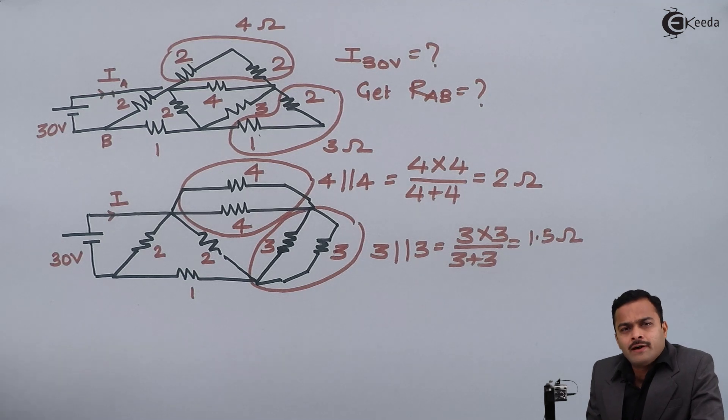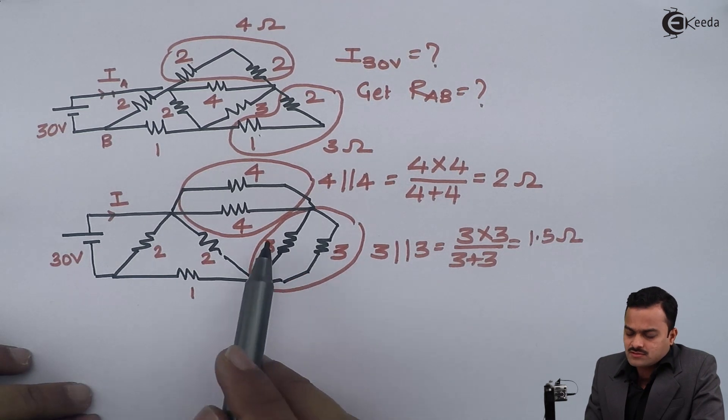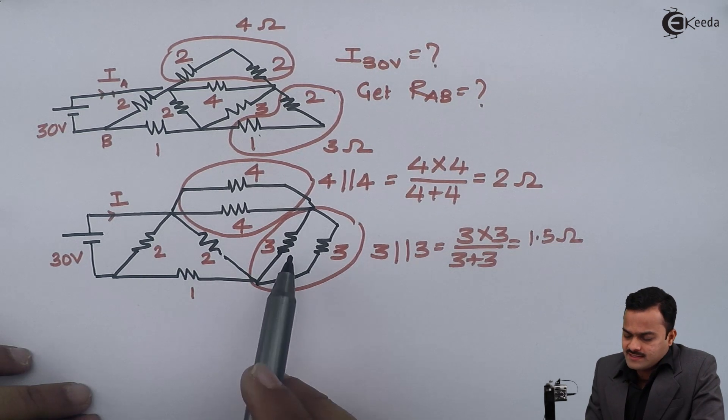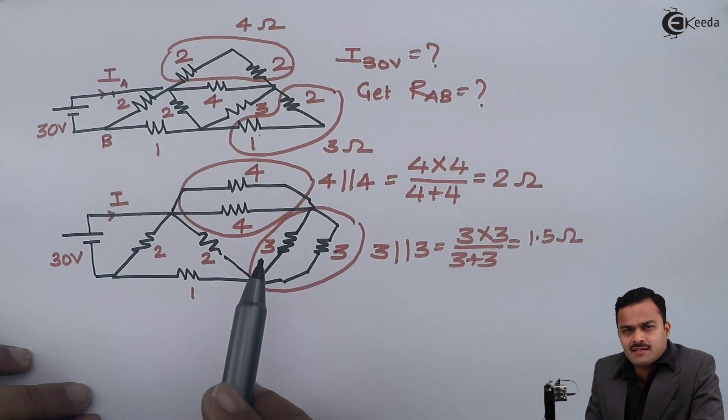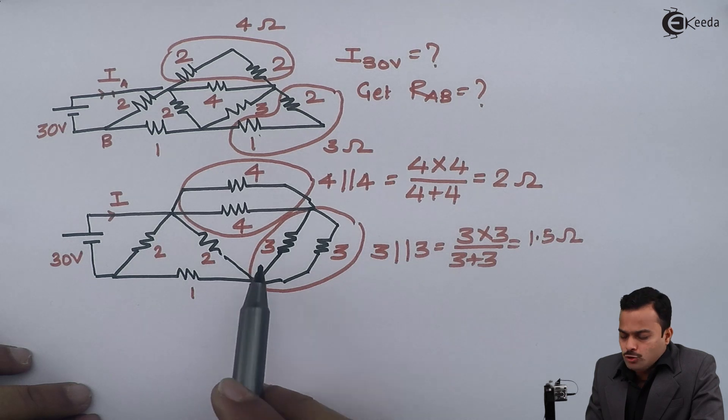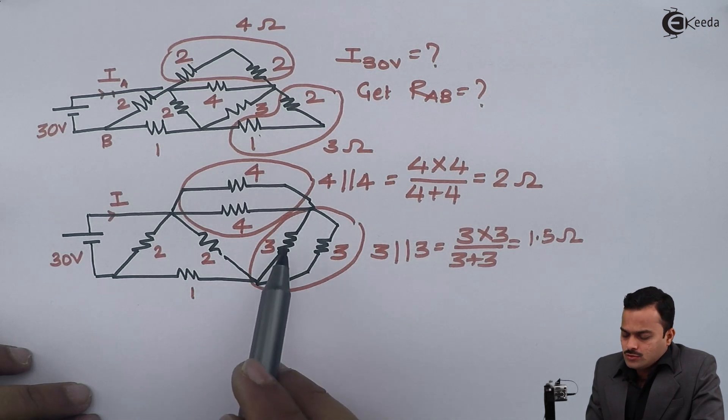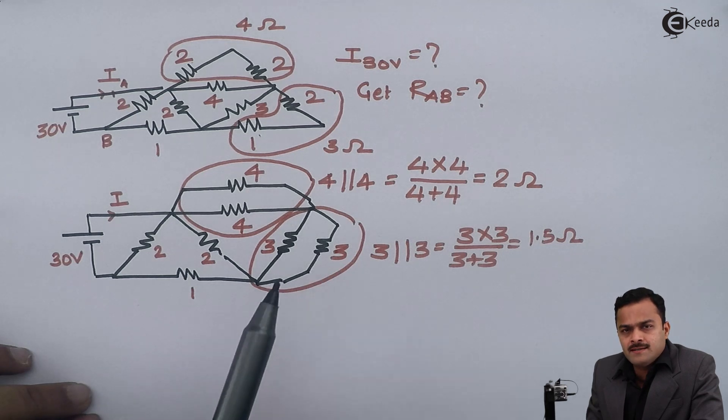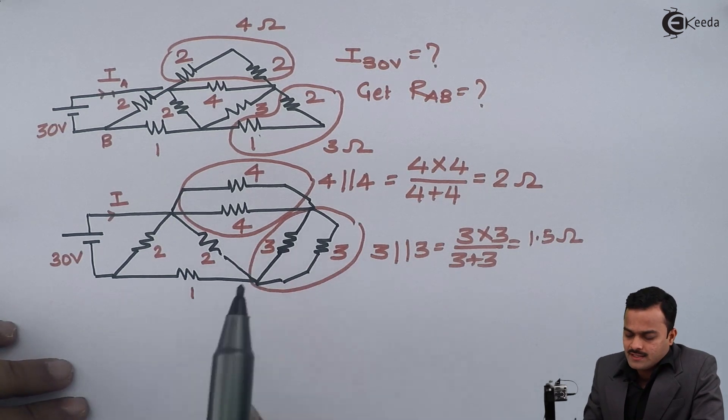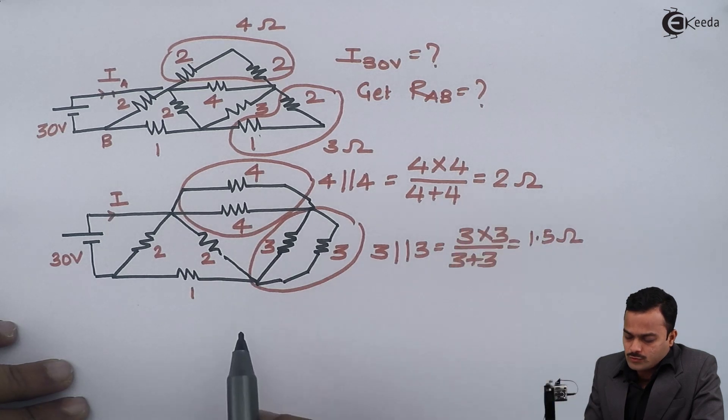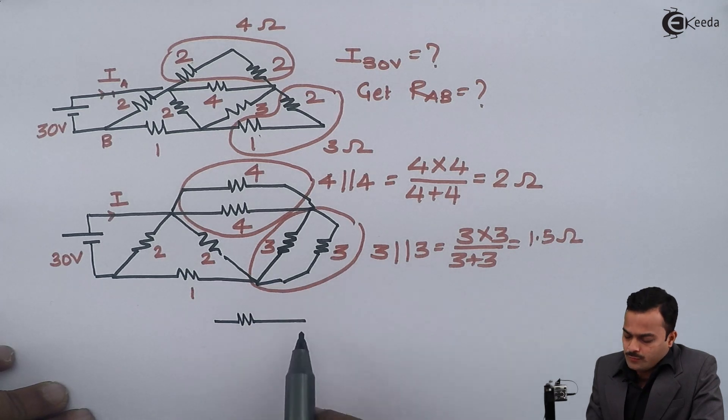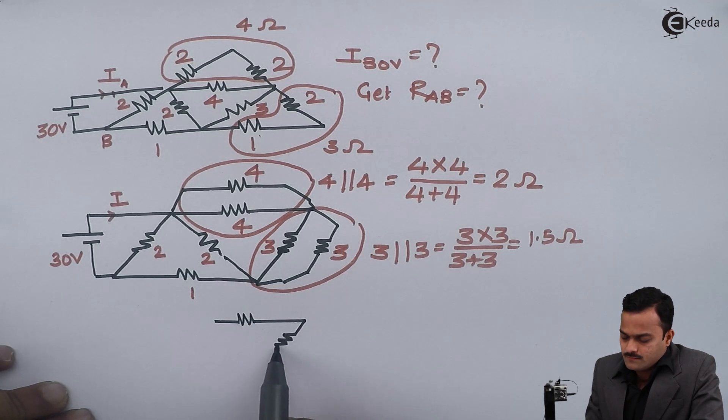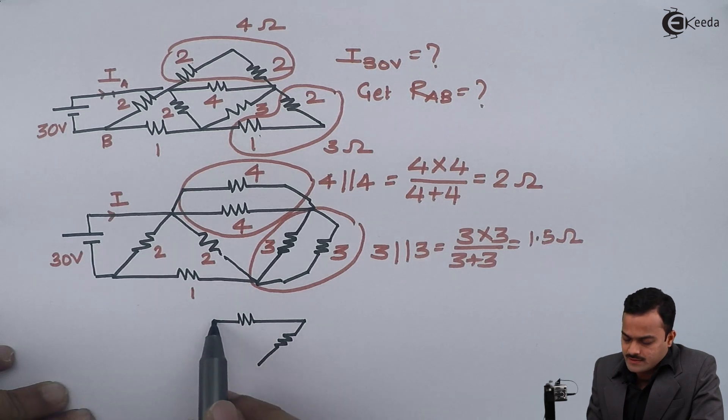Another hint I would like to give: whenever you have to check a parallel connection, whenever 2 resistors are forming a loop, I can say those 2 resistors are in parallel. You can take any problem and check this condition. Whenever you are getting a closed circuit because of 2 resistors, those 2 resistors are always in parallel. So this 4 ohm and 4 ohm will become 2 ohm.